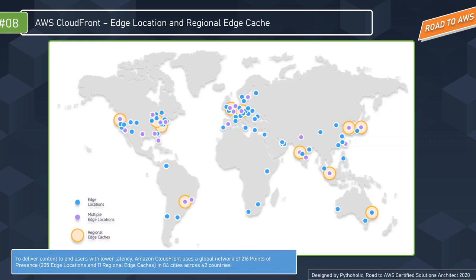Amazon has spread its CloudFront network across the globe — 216 points of presence, with 205 edge locations and 11 regional edge caches spanning 84 cities across 42 countries. No matter where you are in the world, you can make use of AWS CloudFront. The origin for CloudFront can be configured in several ways, which we'll now explore in depth.